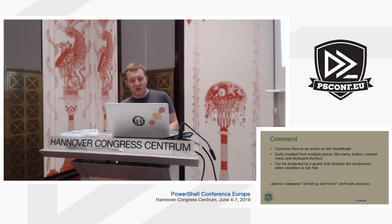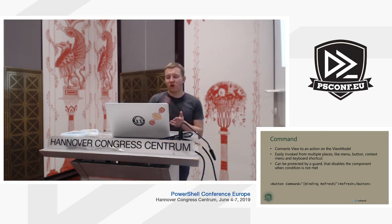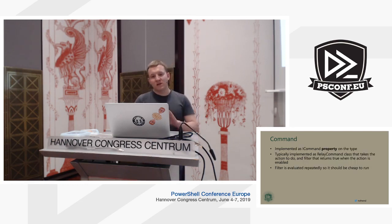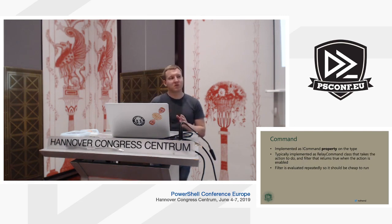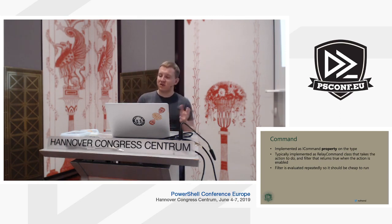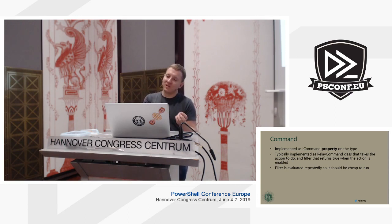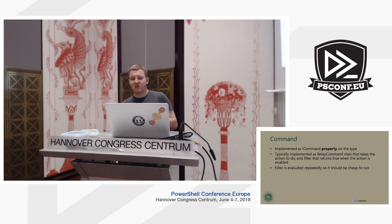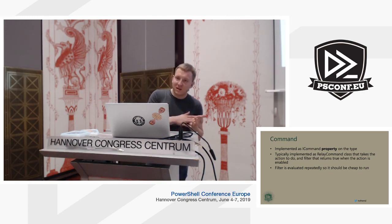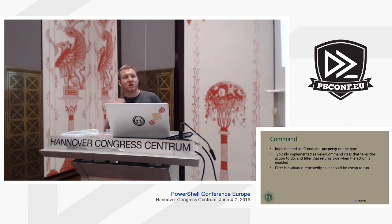In XAML a button has a Command binding pointing to a 'Refresh' property on the ViewModel. The ViewModel property has type ICommand, typically implemented as a RelayCommand class. You give RelayCommand a script block for what to do when invoked, and another script block as a guard — run cheaply and often — that returns whether the action is enabled or disabled. Don't put heavy work in the guard because it will slow down your GUI.